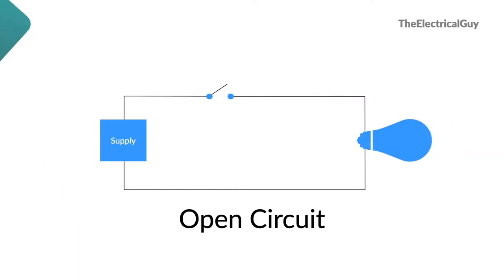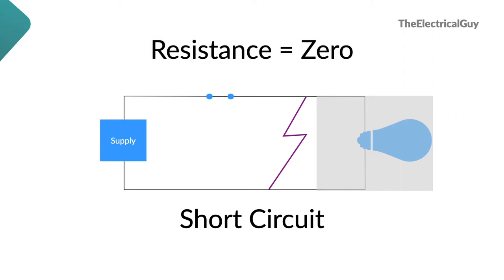In open circuit, since the path is broken, resistance of circuit becomes infinite, and hence no current can flow in the circuit. Exactly opposite to that is short circuit. In short circuit, an unwanted path of very low or negligible resistance is created, so circuit's resistance is almost zero. And hence, very high amount of current or ideally infinite current flows through the circuit.